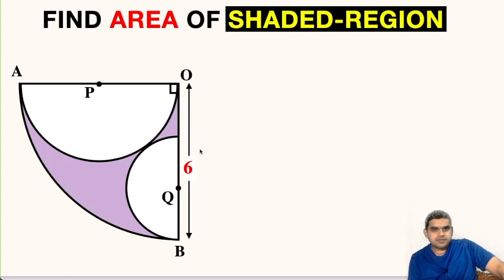As you can see in this figure, first of all we have a quarter circle, then a big semicircle and then a small semicircle. This is the common point of contact. Now this quarter circle has a radius of 6 units which is given to us and we have to find the area of this shaded region.